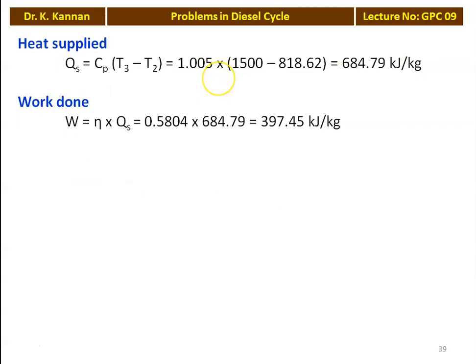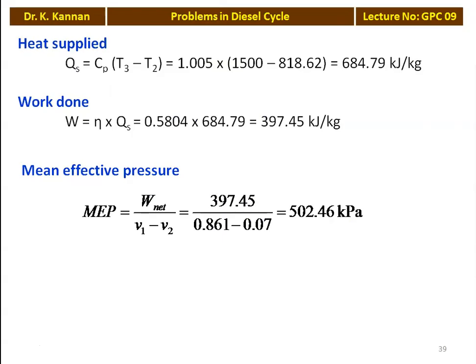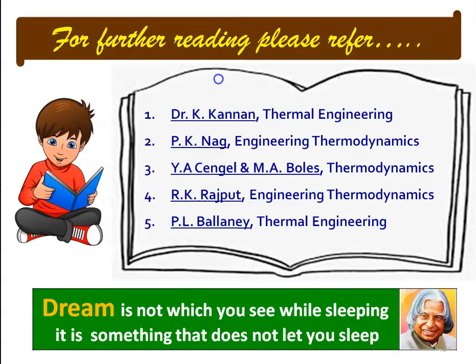All values have been calculated for both the Otto and Diesel cycles — all pressures and temperatures at salient points, efficiency, and mean effective pressure. We stop here. These are the reference books you may use for additional information on this topic and for more practice problems in the Diesel cycle. I have published a book on thermal engineering which you can refer to for additional problems; other books mentioned here can also be referenced for additional information.